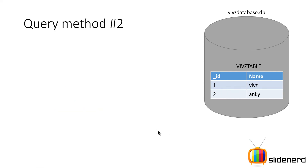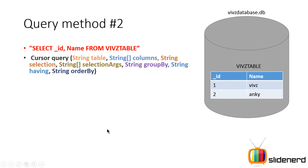Let me talk about the second method, which is the Android recommended approach of performing queries. The same query — select underscore ID, name from Vivs table — will be executed using db.query. This method returns a cursor and takes a whole list of arguments: the table, what columns you want to select, a string selection (the WHERE condition like 'name equals to Vivs'), selection args, group by, having, order by, and all those clauses.